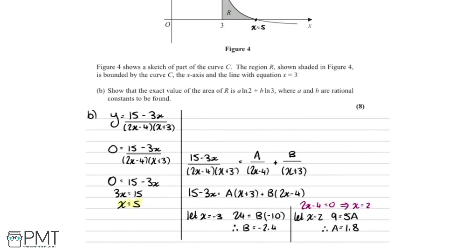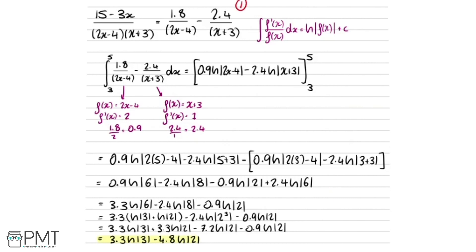Looking through to see where we get the 8 marks: two marks for setting up partial fractions and working to find values for A and B; one more mark for the correct values of A and B written in the correct form; four marks for integrating successfully, evaluating at x equals 5 and x equals 3, and using log laws to reach the correct form; and the final eighth mark for correctly identifying 3.3 as the coefficient of ln 3, and minus 4.8 as the coefficient of ln 2.